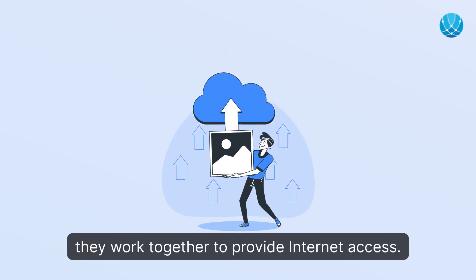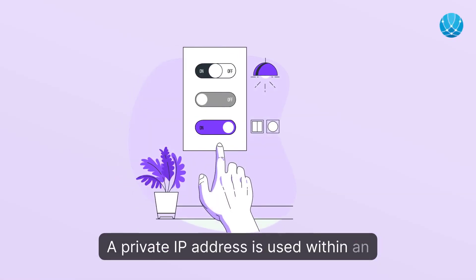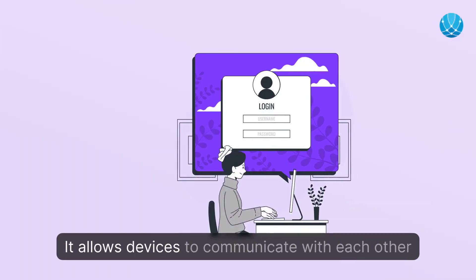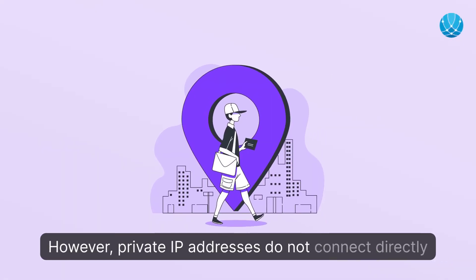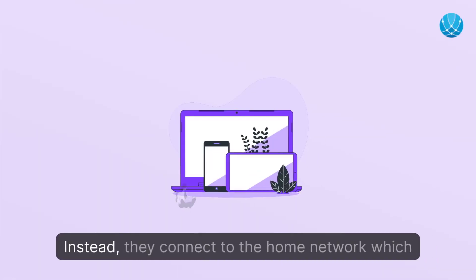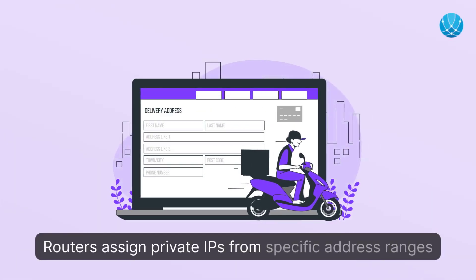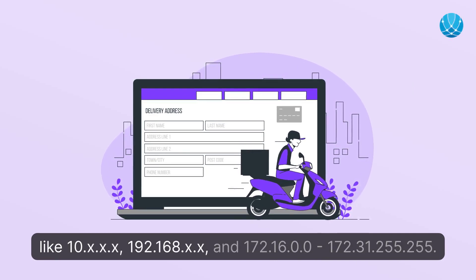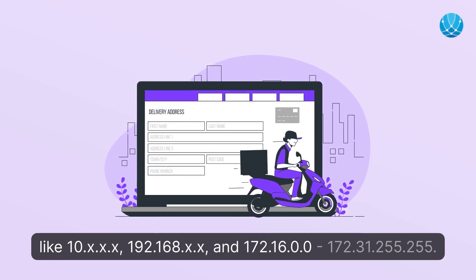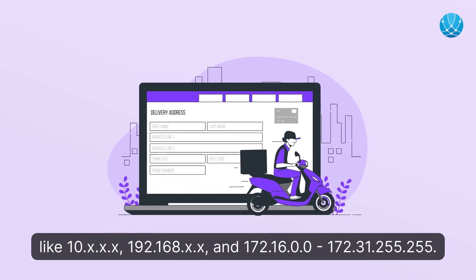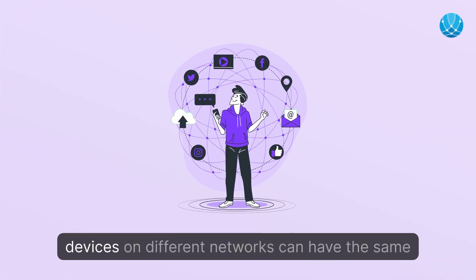What is a private IP address? A private IP address is used within an internal network, such as your home network. It allows devices to communicate with each other and prevents IP conflicts. However, private IP addresses do not connect directly to the internet — instead, they connect to the home network, which has an IP address connected to the internet. Routers assign private IPs from specific address ranges like 10.x.x.x, 192.168.x.x, and 172.16.0.0 through 172.31.255.255. These addresses are unique within a network, but devices on different networks can have the same private IP.